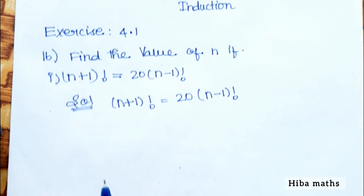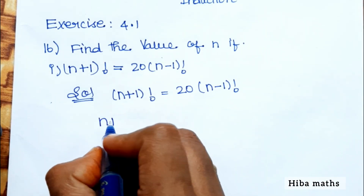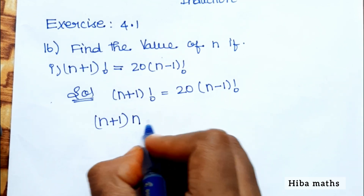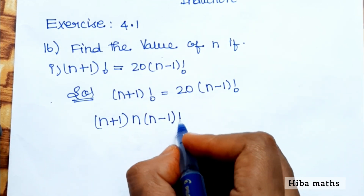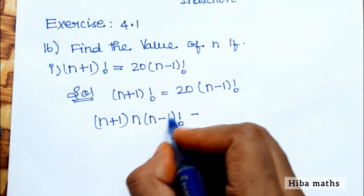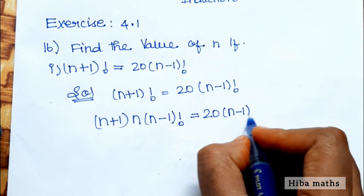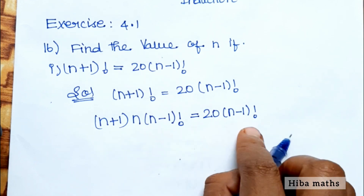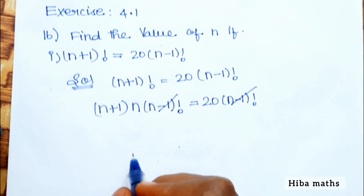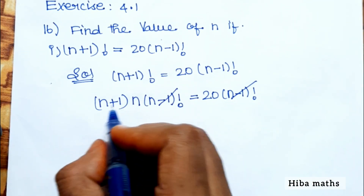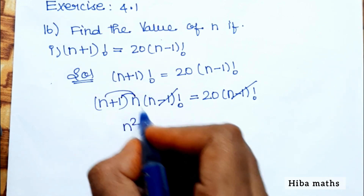We expand (n+1)! as (n+1) into n into (n-1)! on the left-hand side, which equals 20 into (n-1)! on the right-hand side. The (n-1)! terms cancel from both sides, leaving us with (n+1) into n equals 20.